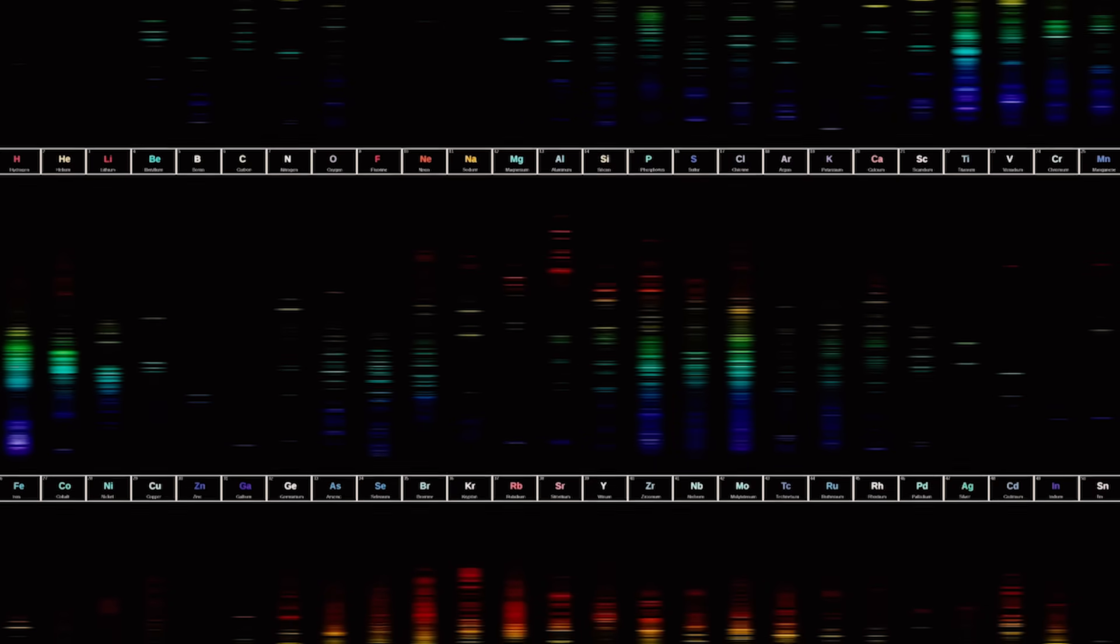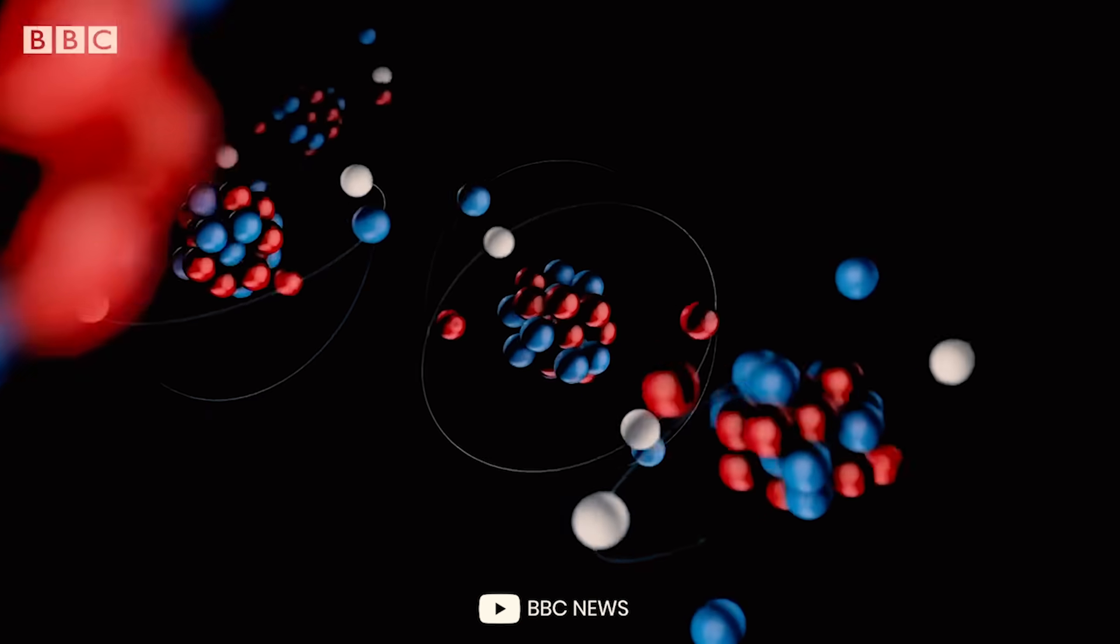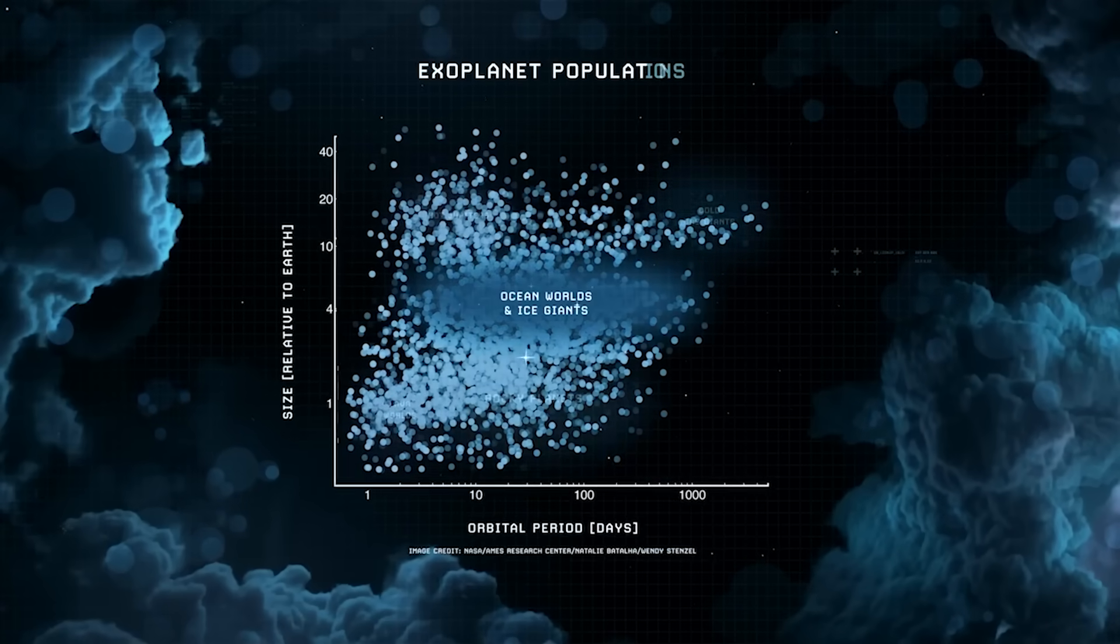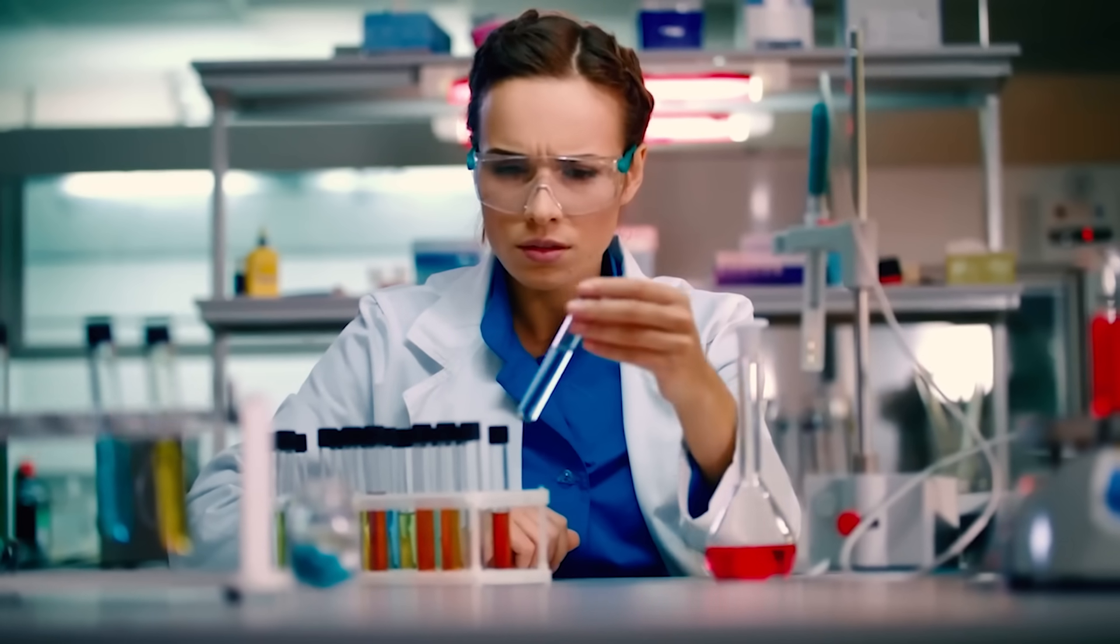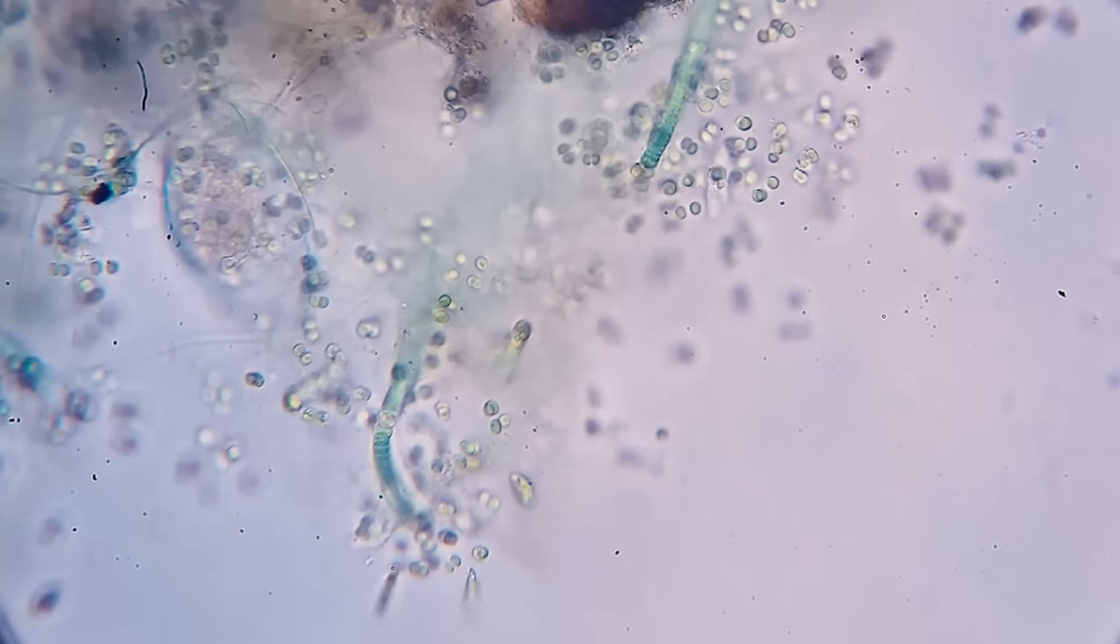All the while, scientists are discovering new ways to detect biomarkers on exoplanets. Some of these methods can potentially even describe how alien life forms existing there might look. In one study, scientists looked into the Archaean Aeon of Earth that was inhabited by a multitude of early life forms like purple bacteria.